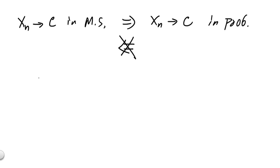Again, to look for a counter example, we do not have to go further than the yn's we have been working with. So here we know that yn converges to 0 in probability, but it turns out it does not converge to 0 in mean squared. And to see why this is the case,